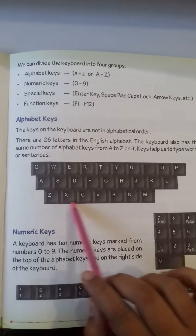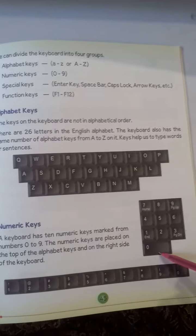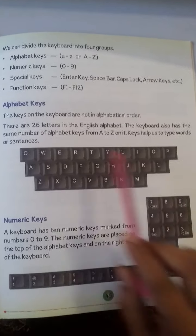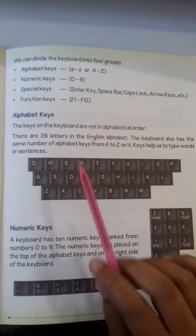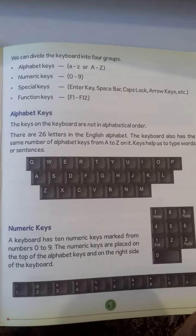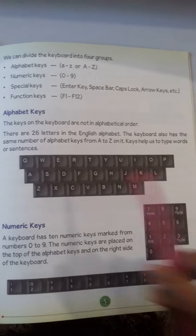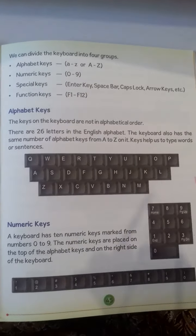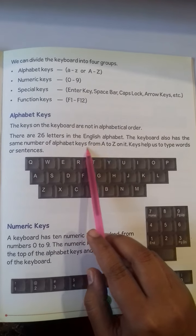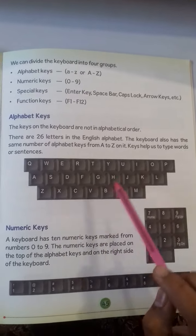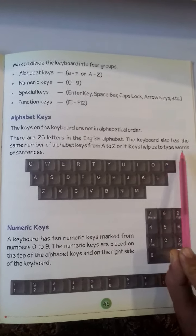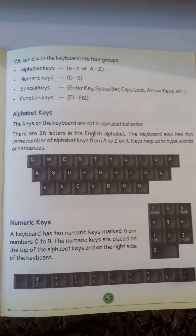The first group is alphabetic keys. These keys are not in alphabetical order. There are 26 letters in the English alphabet. The keyboard also has the same number of alphabet keys from A to Z. These keys help us to type words and sentences.